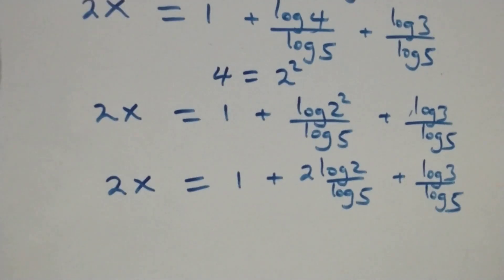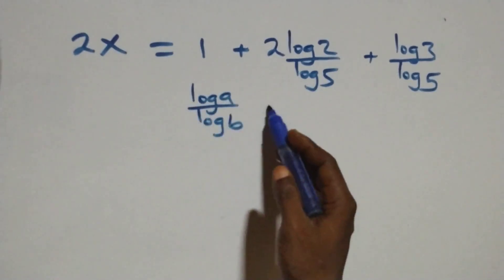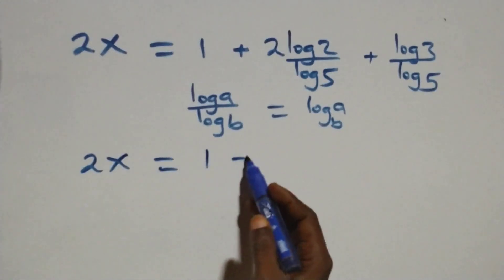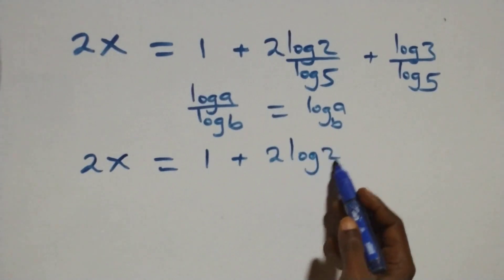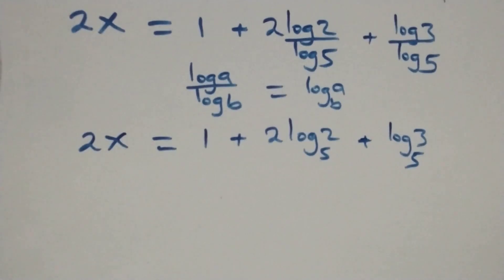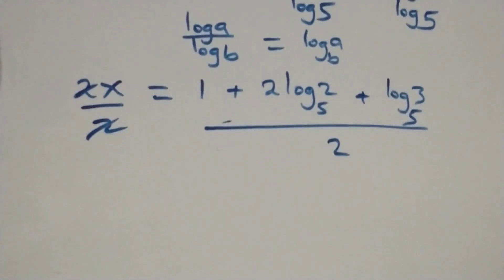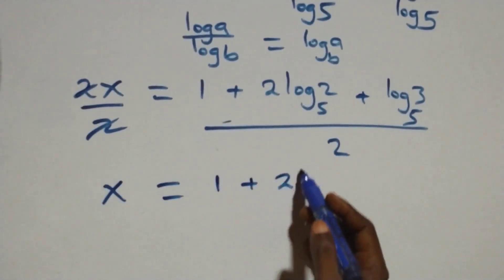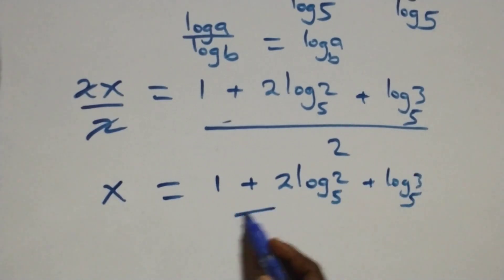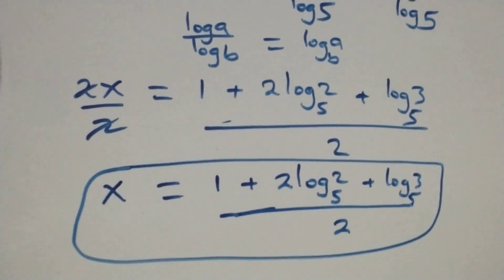We apply the change of base formula: log a over log b is the same as log a to base b. So two x equals one plus two log base five of two, plus log base five of three. Dividing both sides by two, the twos cancel and we have x equals one plus two log base five of two, plus log base five of three, all over two.